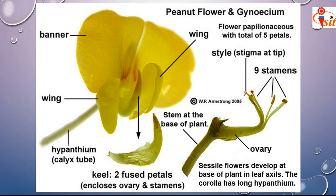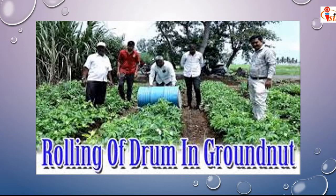The appearance of the stigma is monocarpellary and this is the calyx tube. The growth of the gynoecium continues along the calyx tube up to the cataphyll. Rolling of the drum in the groundnut field is done because after fertilization, the rolling helps in pegging — it is a general agronomical practice to increase peg penetration into the soil and thereby increase yield.